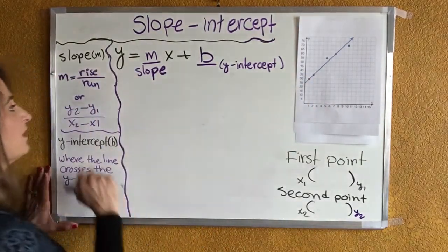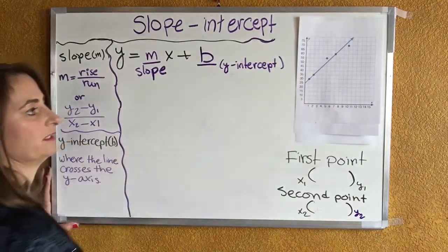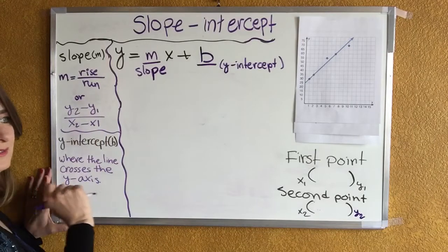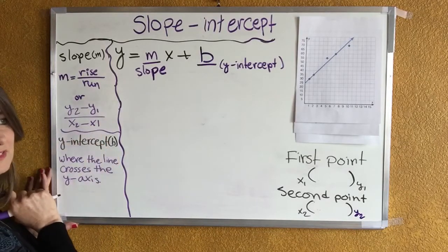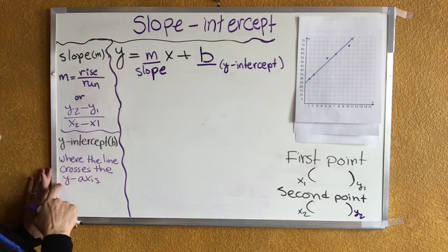Or we can choose two dots on the line, any two dots on the line, find the difference in the y's divided by the difference in the x's. For the y-intercept, it's where the line crosses the y-axis.